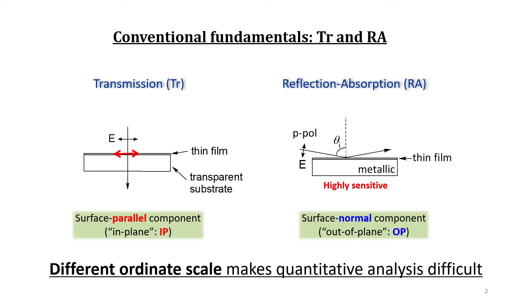In the case of RA technique, the film must be deposited on metallic surface, and the p-polarized IR light is irradiated at a grazing angle to generate the surface normal electric field oscillation of the metallic surface. As a result, in this case, only the surface perpendicular component of molecular vibrations is selectively observed.